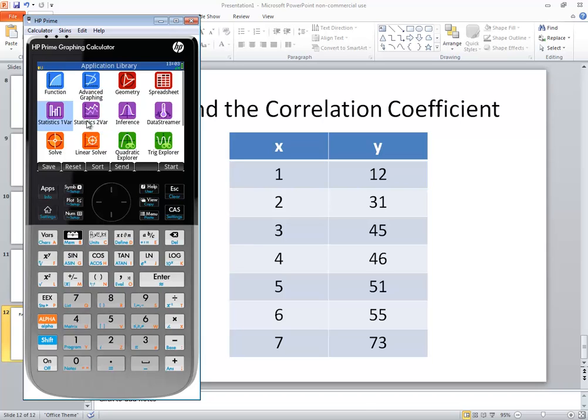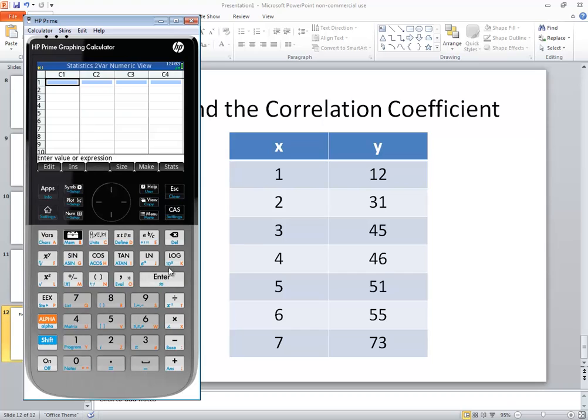If you're not at the apps, press your apps and it'll take you back to here. We want to go into the statistics to bar. We got two sets, we got x and y, so we've got two columns. Go into statistics to bar and press enter.